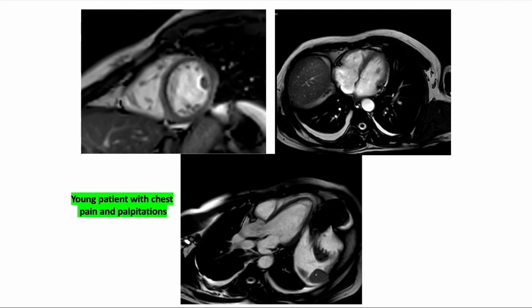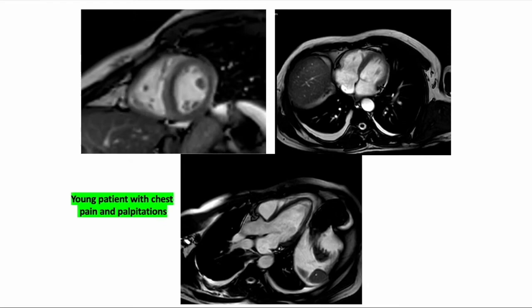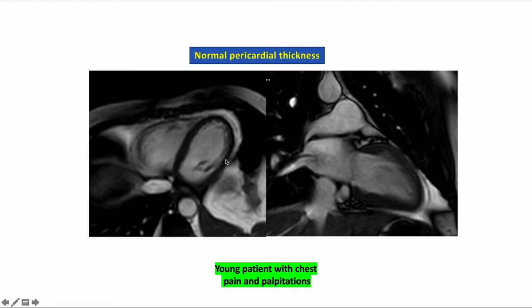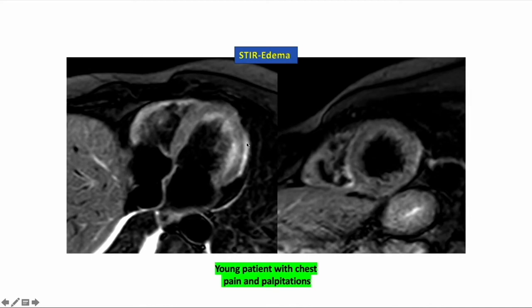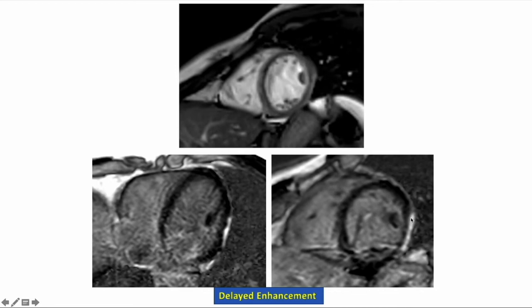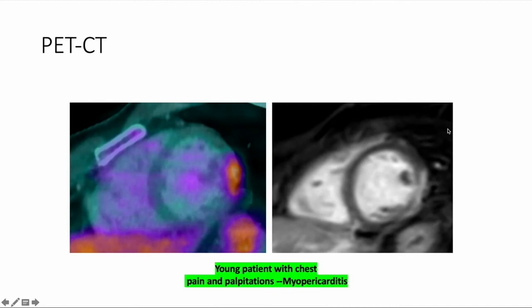This is a young patient who presented with chest pain and palpitation. The lateral wall of the LV is hypokinetic, seen on 4-chamber and 3-chamber views. On white blood image sequences, pericardial thickening appears normal. On still images, there is focal high signal intensity in the pericardium along the lateral wall of the LV, seen on short axis and 4-chamber views. When contrast is administered, there is intense enhancement of the pericardium as well as the epicardial surface of the lateral wall, corresponding to the area of hypokinesia. This patient showed intense FDG uptake in the lateral segment of the LV as well as the pericardium, confirming the diagnosis of myopericarditis.